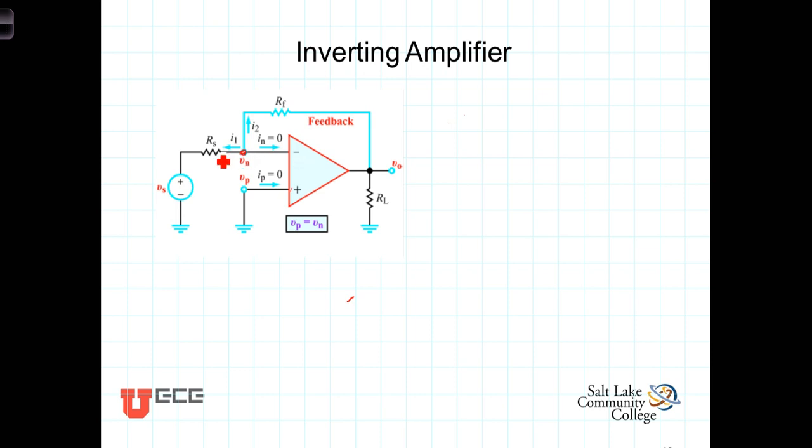So starting here, adding the currents leaving this node, starting with the current going in that direction, we have V sub n minus V sub s divided by R sub s plus the current leaving the node going in that direction is going to be V sub n minus V out divided by R sub f plus the current entering the inverting terminal of the op-amp, which of course is zero, so there's nothing to write there. Thus the sum of those two terms must equal zero.